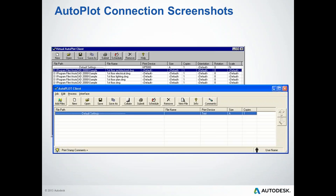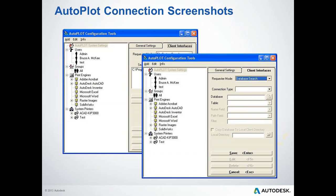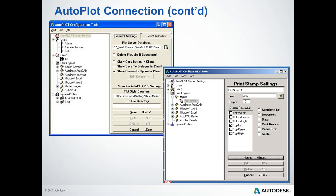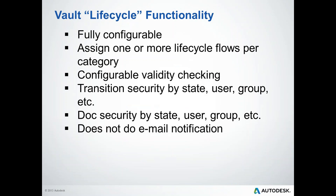AutoPlot is great for bigger operations where you don't have to worry about users setting parameters incorrectly or sending things to the wrong printer. It's also good for system integration — for example, customers print a work schedule of parts from their ERP system, AutoPlot reads that parts list, goes to Vault, finds the drawings for those parts, and batch prints them so they're waiting on the printer for distribution to the shop. With AutoPlot, all actions are controllable at the server level.